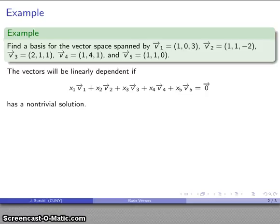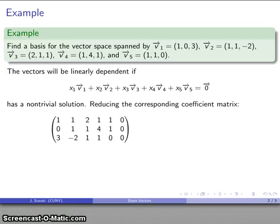And again, what we want to do, the vectors will be linearly dependent if I can find a linear combination equal to the zero vector with a non-trivial solution. So I'll set up the corresponding coefficient matrix. So again, here's all of my vectors as column vectors, and I want to augment that with the zero column vector.